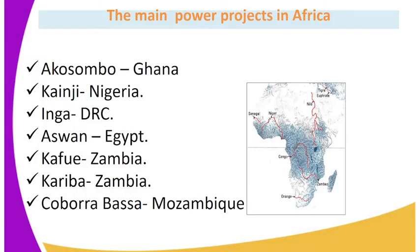The main power projects in Africa include: Akosombo in Ghana; Kainji in Nigeria; Inga in DRC; Aswan High Dam in Egypt; Kafue in Zambia; Kariba Dam in Zambia; and Cabora Bassa in Mozambique.